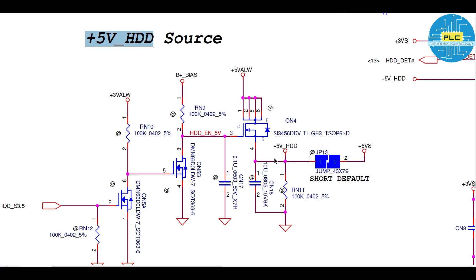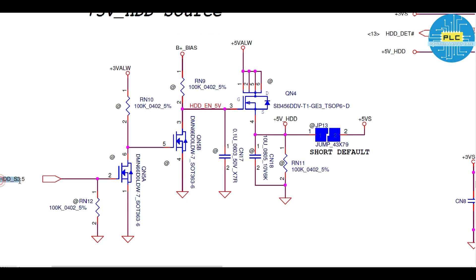A signal called HDD_S3.5 is involved here. When this signal comes, it will enable the circuit. Pin number 6 goes to ground, so there will be no voltage there and that section will be in off condition. Then B+ voltage is available, the gate becomes active, and drain-to-source supply passes through. When gate voltage B+ bias is present, drain-to-source voltage passes, and that final voltage is called plus 5V HDD.